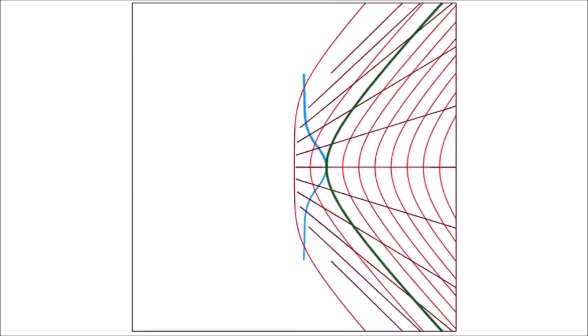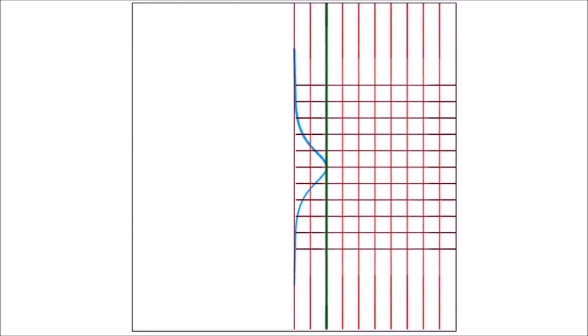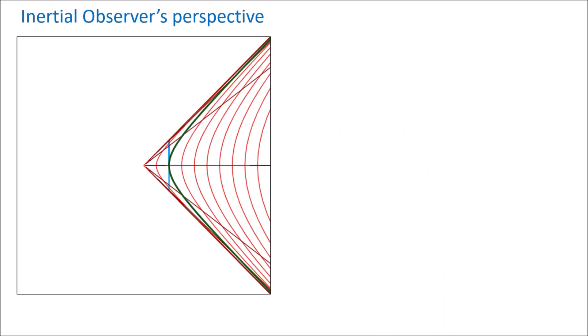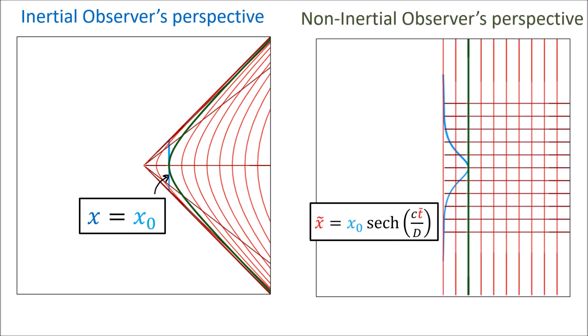Now let's take this spacetime diagram and reshape it so that we view spacetime from Rindler's point of view, so that the Rindler coordinate lines form a square grid. We can now see that from Rindler's point of view, his own green world line is now straight and vertical and he appears stationary in space. Meanwhile, the blue inertial world line of Feynman is no longer straight — it is now curved. In an inertial observer's coordinate system Feynman's world line is straight with a constant x value, but according to Rindler, Feynman's blue world line makes the shape of a hyperbolic secant curve.